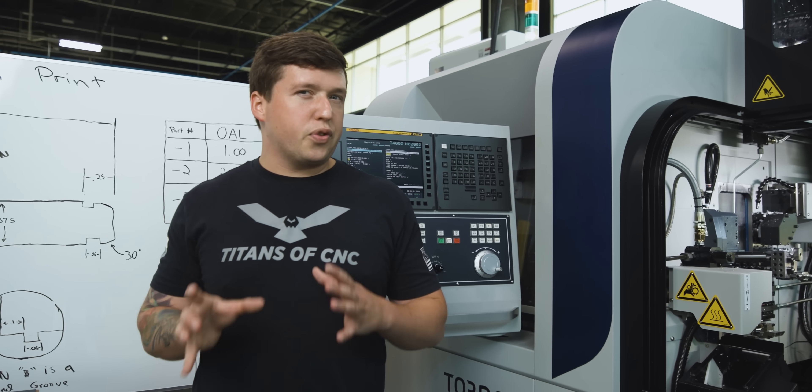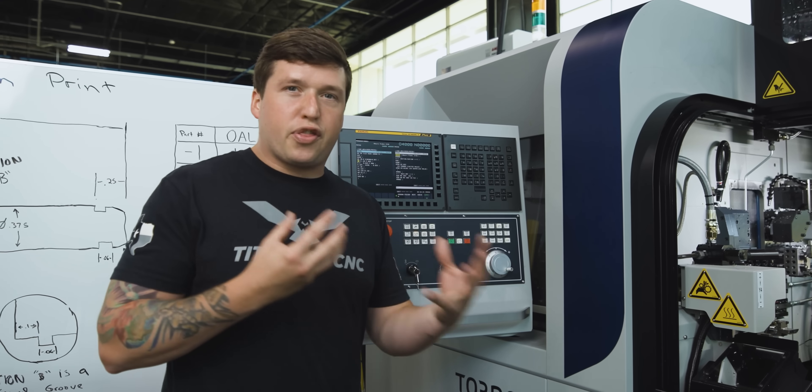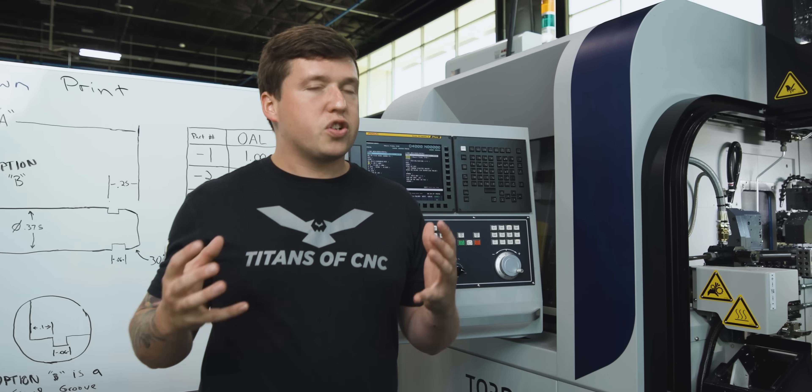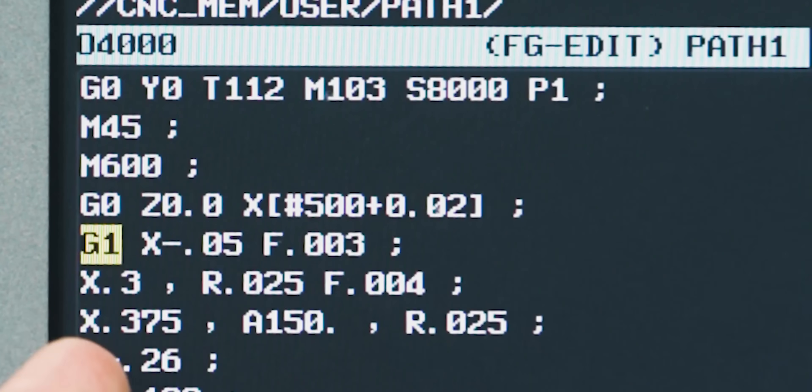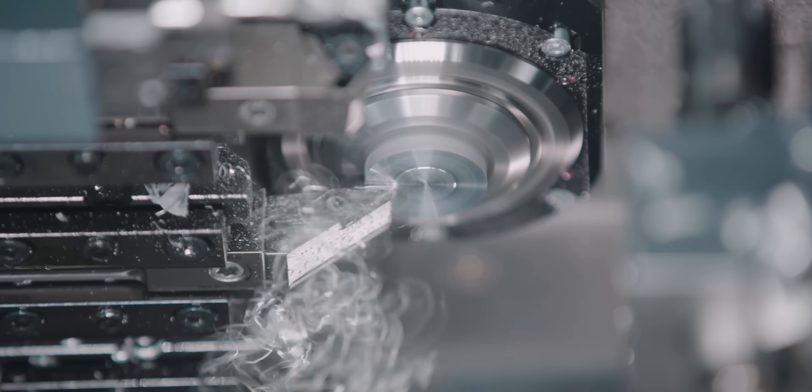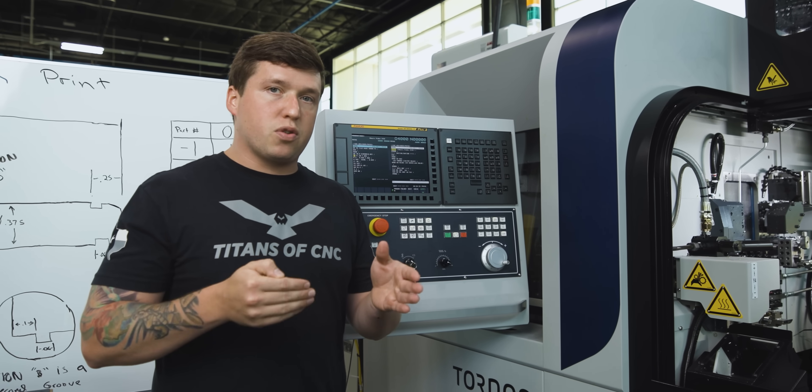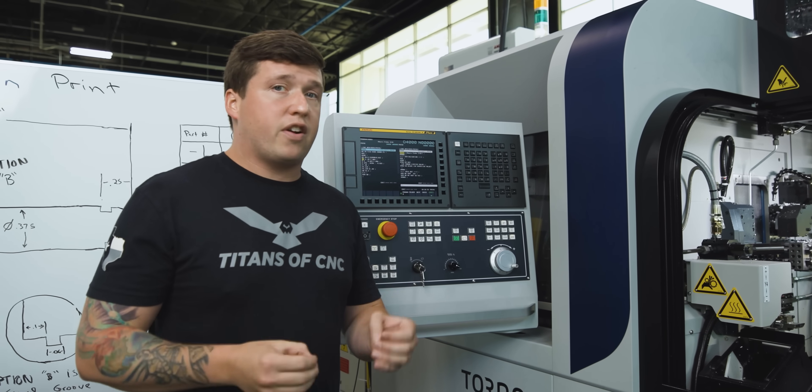Now let's get into the machining. We're going to go through this whole program to show you how the thought process works when writing a macro like this. The first thing I'm going to do is face off, come up and put a chamfer on the front of the part, and turn past the first groove because the first groove is always going to be on there no matter what.